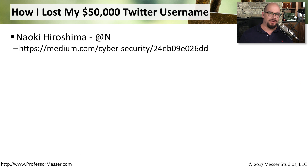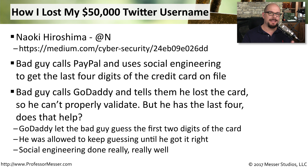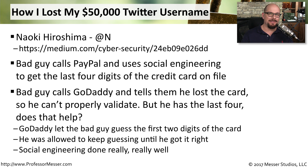One very frightening example of social engineering happened to Naoki Hiroshima, who has the Twitter username @N. The bad guy called PayPal and used social engineering to learn the last four digits of Hiroshima's credit card. He then called GoDaddy — where Hiroshima had all his websites — claiming he had lost his credit card but could validate himself with the last four digits. GoDaddy also required the first two digits, but allowed the bad guy to guess until he got it right — obviously very poor security from GoDaddy's perspective, but very effective social engineering.